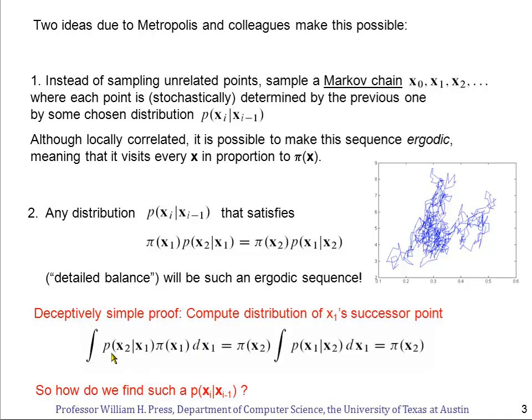Now what is this equal to if detailed balance holds? Well with detailed balance, you can see the thing right here. The first two terms are exactly the left-hand side of this equation. So I can substitute for that the right-hand side of this equation of detailed balance. Now I have a pi of X2 which comes out of the integral because the integral is over DX1. And what's left inside is simply the probability of X1 starting from X2 integrated over all possible outcomes X1. And that's of course 1 because this is a normalized probability.